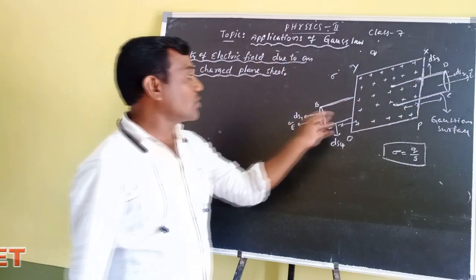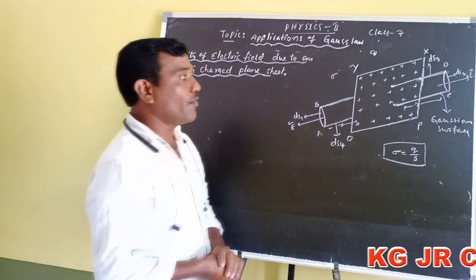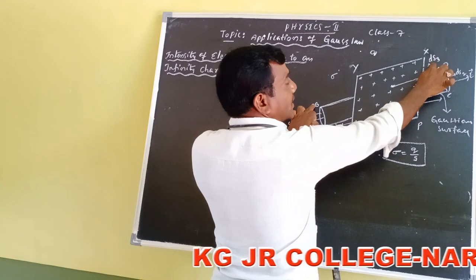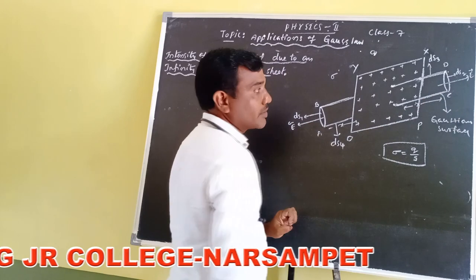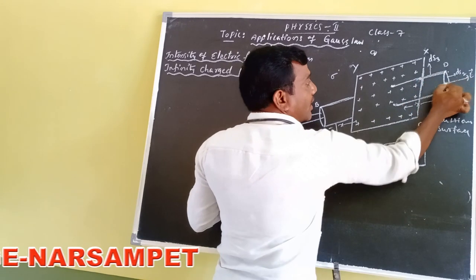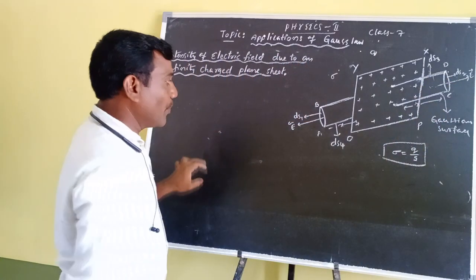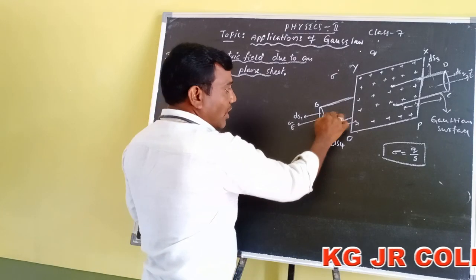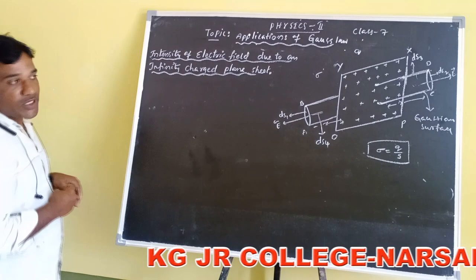The Gaussian surface has four faces. The BD surface area is DS3 and the AC surface area is DS4. DS3 and the electric field direction are perpendicular to each other. Similarly, E and DS4 are also perpendicular to each other.